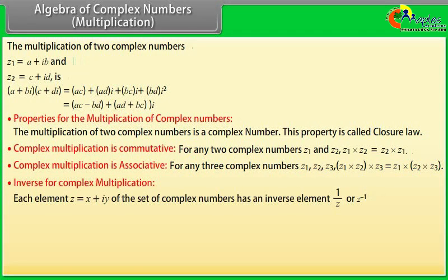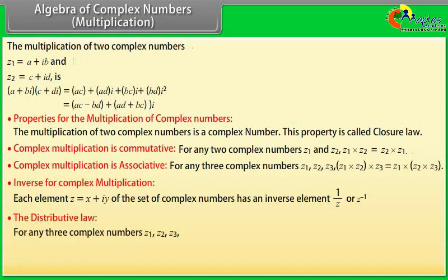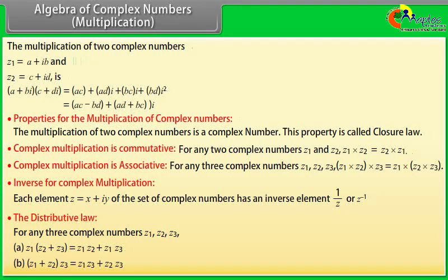Each element Z equals X plus iota Y of the set of complex numbers has a multiplicative inverse: 1/Z or inverse of Z. The distributive law states: for any three complex numbers Z1, Z2, Z3, Z1 times (Z2 plus Z3) equals Z1 times Z2 plus Z1 times Z3, and (Z1 plus Z2) times Z3 follows similarly.